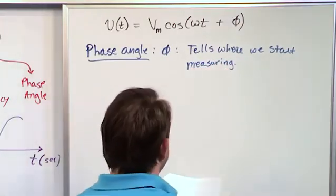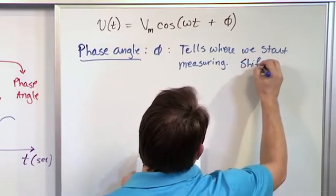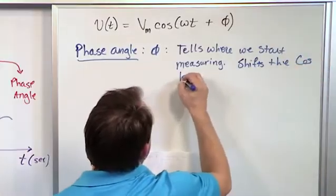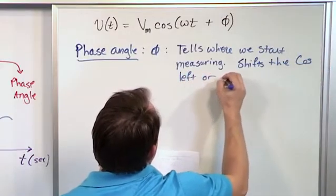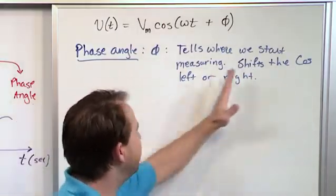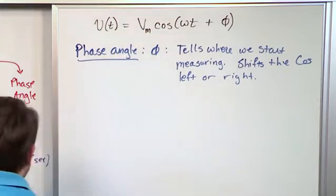Another way to look at it is you could say that it shifts the cosine function left or right. And again, I've mentioned that before. The phase angle does the shifting left and right, but a picture is worth a thousand words, as we say. So let's go ahead and show it, and I think you'll understand.